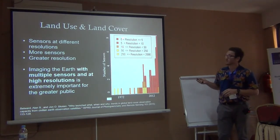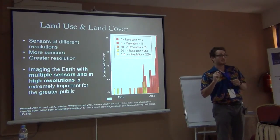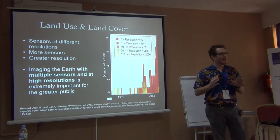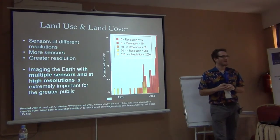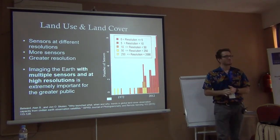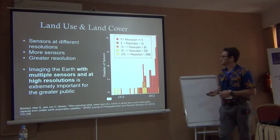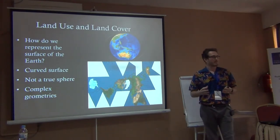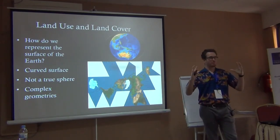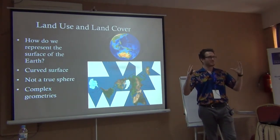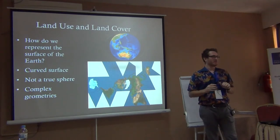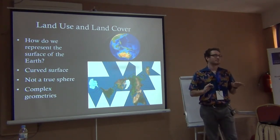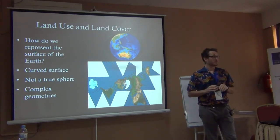We're also seeing an increase in resolution — the detail that we can see. The smaller the resolution size, the more detail we can see, and resolution sizes are decreasing because we want better and better detail. So we can launch satellites into space and look down at a three-dimensional ball of rock and water floating in space. But how do we put that on a computer screen and have it make sense, with dimensions matching up? This is one of the biggest technical challenges of land cover and land use.